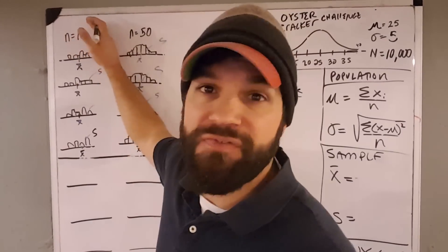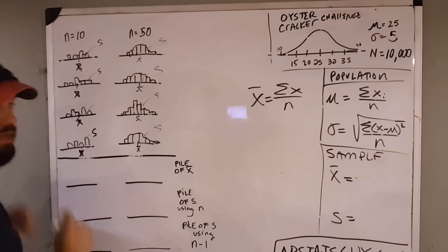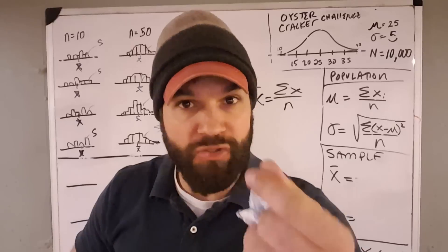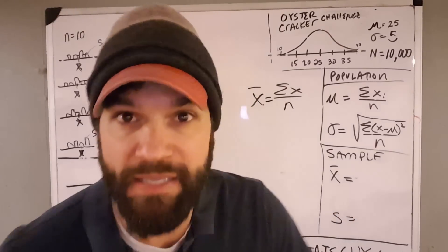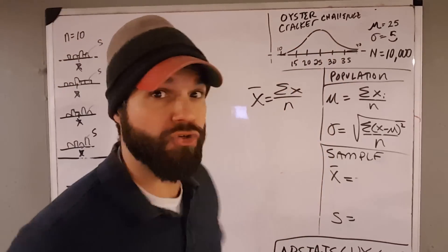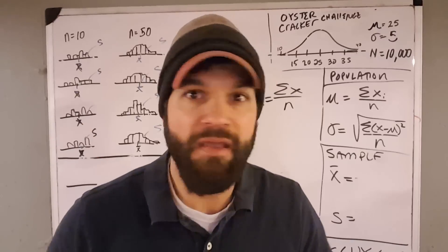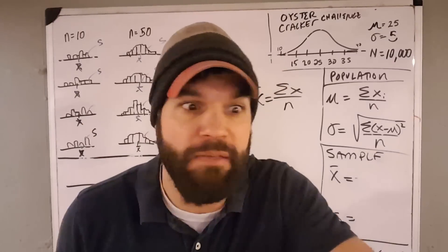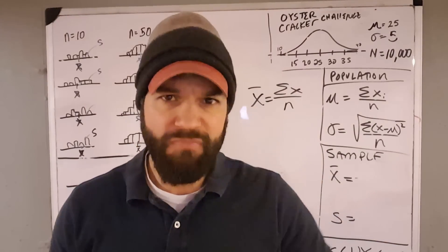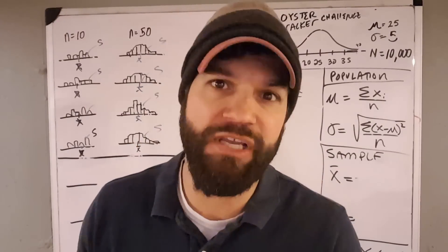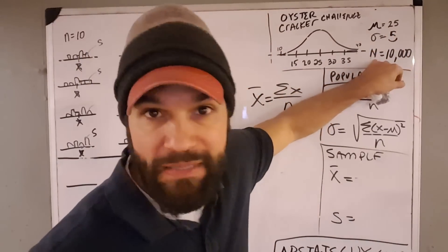So I took all these samples of size 10 and I calculated the mean for them all. I take all those sample means and wonder: are they close to the population mean? Let's look at our population. Suppose I'm doing this thing called the Oyster Cracker Challenge — I want to know how many oyster crackers, like little saltines, you can eat in a minute. I go to a town of 10,000 and have everybody do it. I found out the average was 25 and the standard deviation was 5.